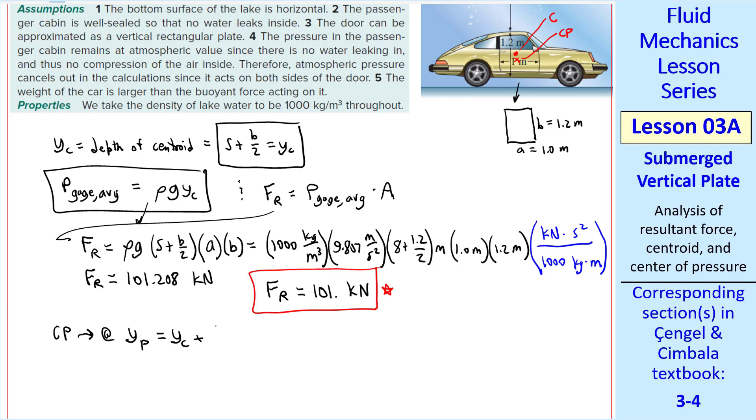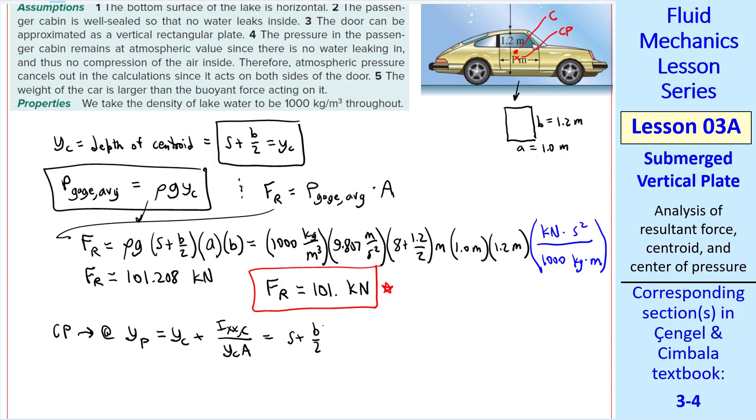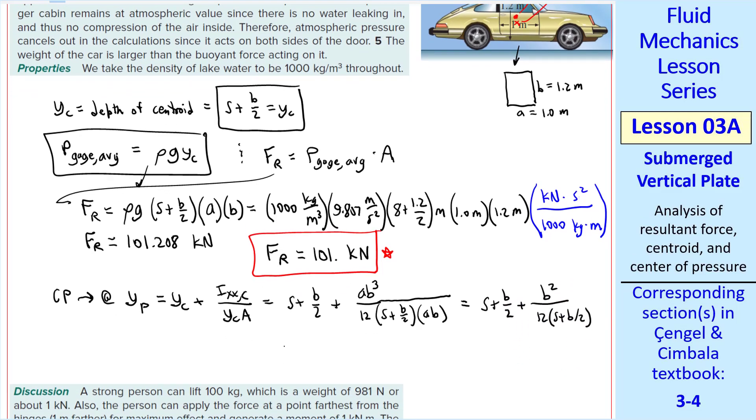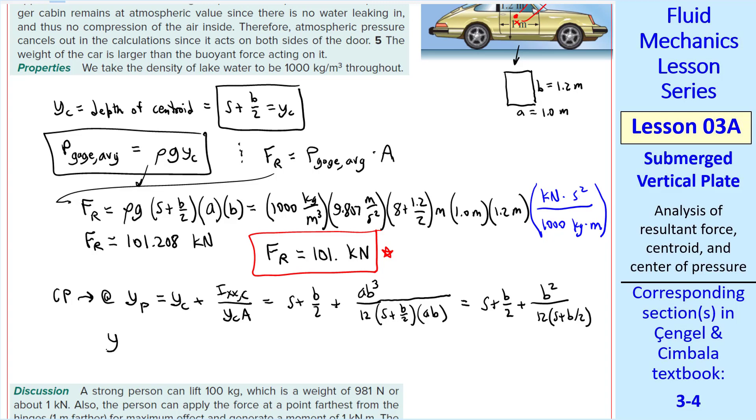The location of this resultant force is at the center of pressure. Using our equation from above, this is YC plus IXXC over YC times A. YC is S plus B over 2. IXXC is AB cubed over 12. YC on the bottom is S plus B over 2 again, and then again the area is AB, which simplifies to S plus B over 2 plus B squared over 12 quantity S plus B over 2. We plug in the numbers to get the depth to the center of pressure. We get 8.61395 meters, to three significant digits. Our answer is 8.61.